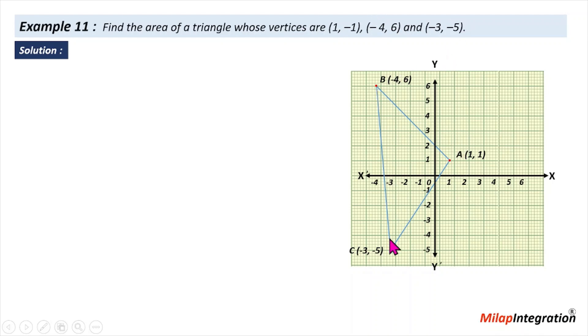Suppose you have triangle ABC - point A, point B, point C. You can make a rough sketch or you can make a simple sketch. Now we have to find the area of the triangle.